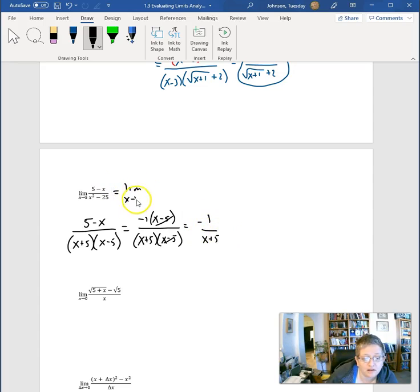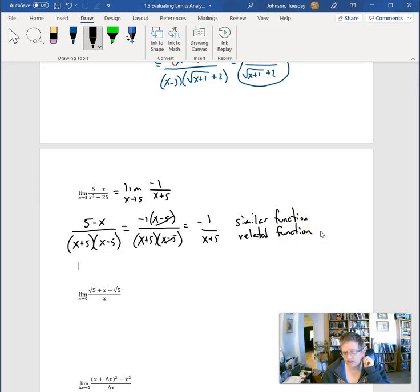So this limit is reduced to finding the limit as x approaches 5 of negative 1 over x plus 5. Remember, calculus doesn't care what happens at 5, so x minus 5 is no big deal if that's just a factor. This is that similar or related function. When I plug in 5, I'll have negative 1 over 5 plus 5, which is negative one tenth.